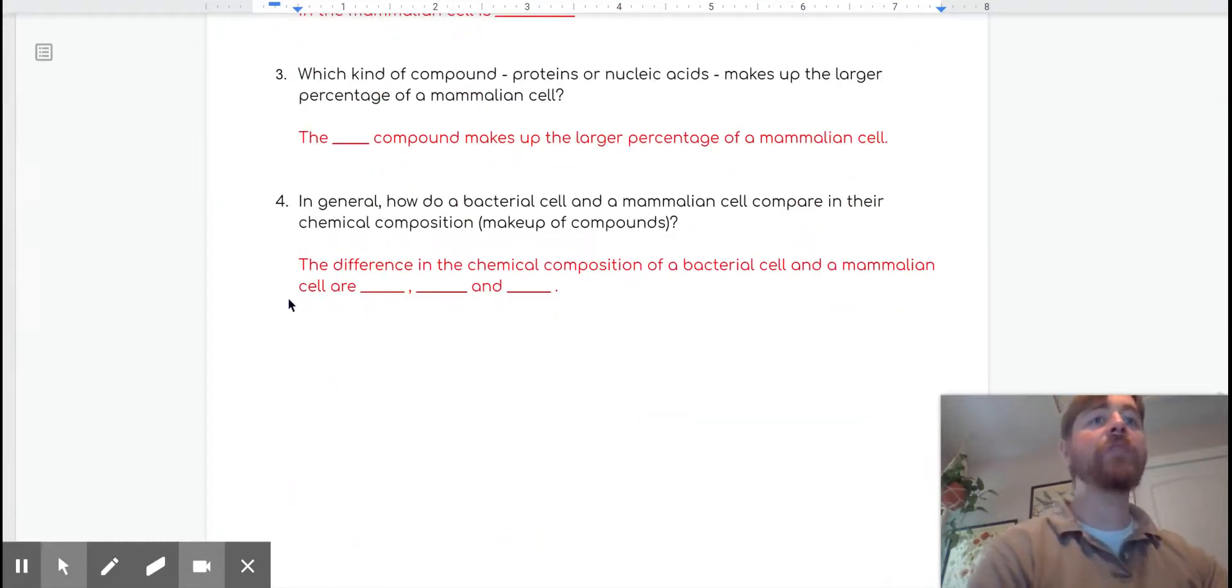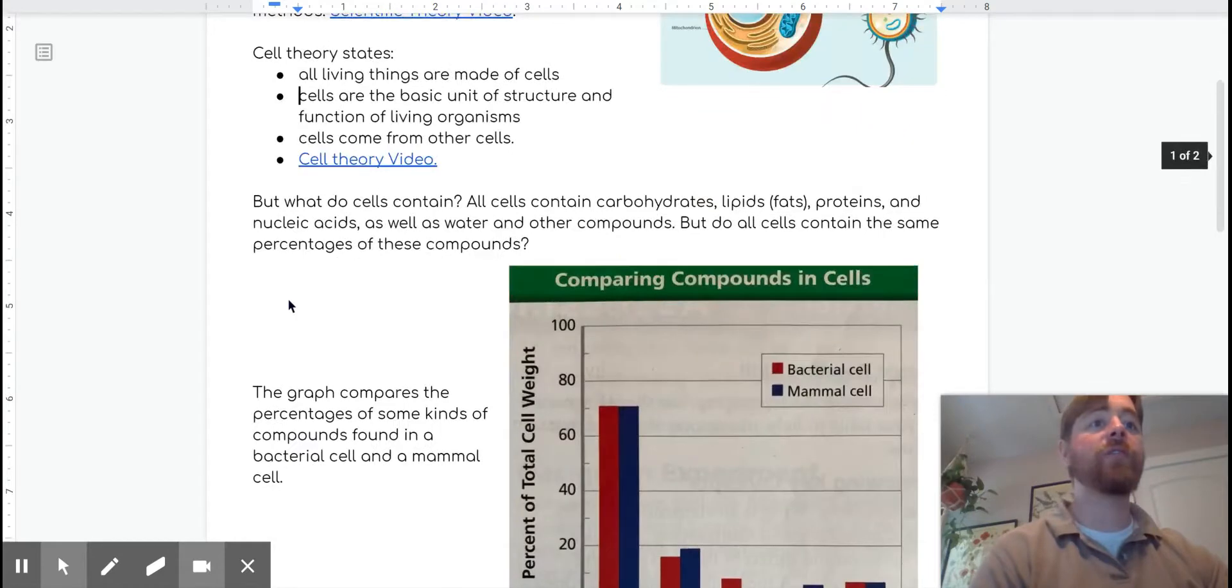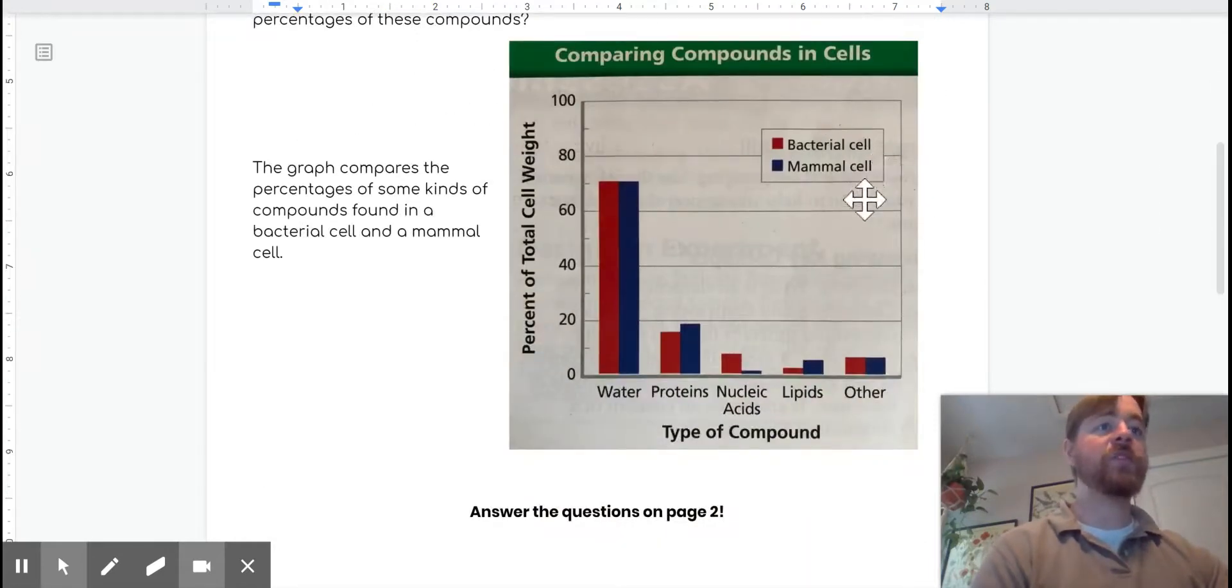Question four, in general, how do bacterial cell and mammal cells compare in their chemical composition? The molecules that we find in those compounds. So then we're looking at bacterial cell versus mammal cell for all the compounds. How do they compare? What's alike? What's different? Explain.